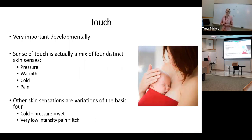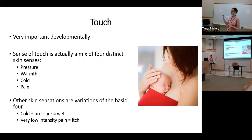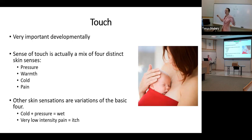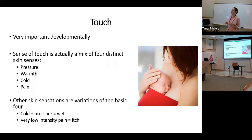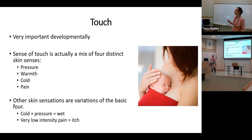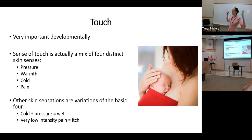On to touch. Touch is very important developmentally — super important for babies, with that skin-to-skin contact. Touch is actually a mix of four distinct senses at the receptor level: pressure, warmth, cold, and pain. Your more complex touch sensations are some combination of those. Itch is very low-intensity pain. Wet is the combination of cold and pressure receptors going off. So basically you've got four distinct sensors at the receptor level, and your complex feelings of touch are built out of that.